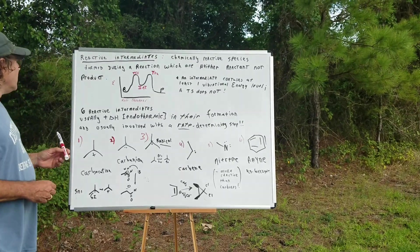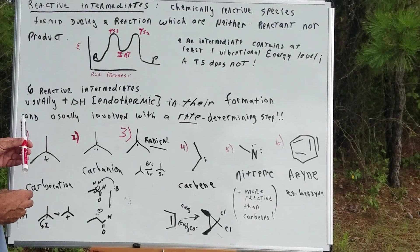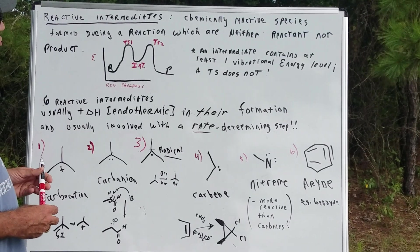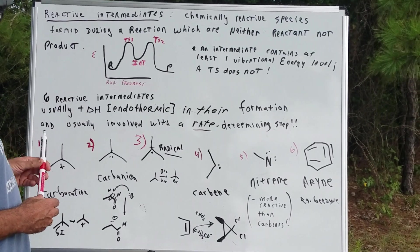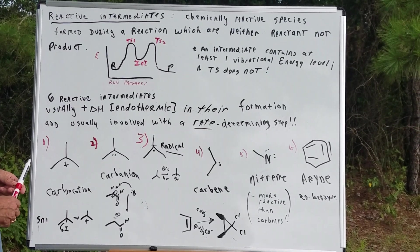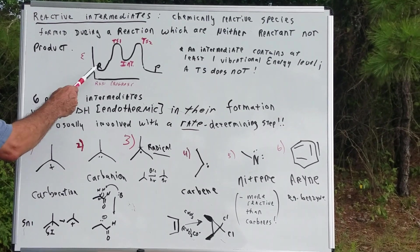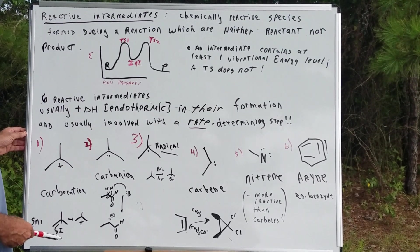All right, Dr. Amana. Now, reactive intermediates are going to be chemical species that are formed during a reaction in which they are neither reactant nor product. Let's look at an energy diagram to illustrate what I mean. Say we have a reaction, this is going to be a two-step reaction. We have a reactant going to a product.